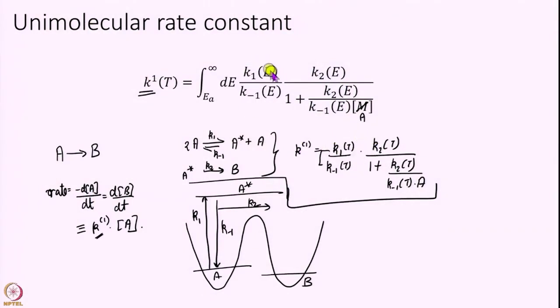Instead of writing these as functions of temperature, we write them as functions of energy and integrate over all possible energies above the barrier height EA. Below EA, no reaction will happen, so we integrate over all energies greater than the barrier height. RRK — Rice, Ramsberger and Kassel — had given a recipe to calculate K1, K−1, and K2 as functions of energy, and that is what we will discuss today.